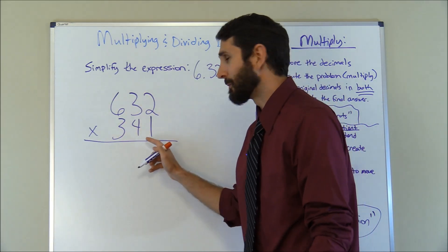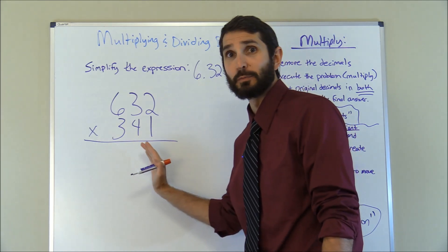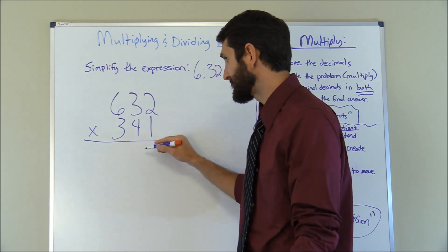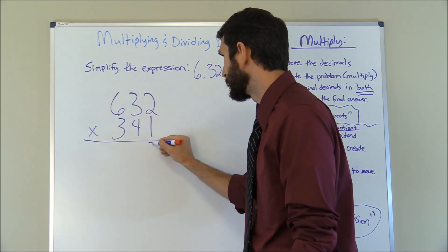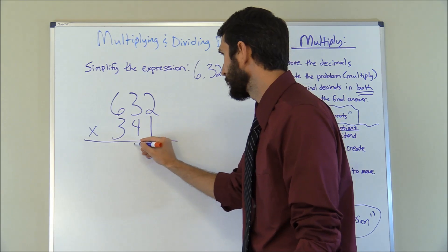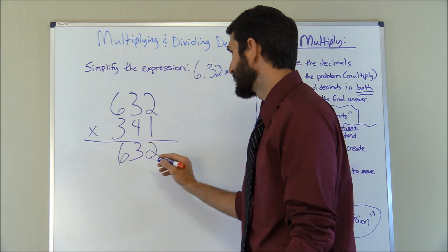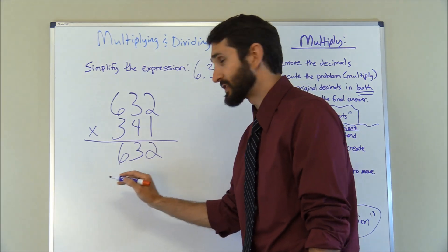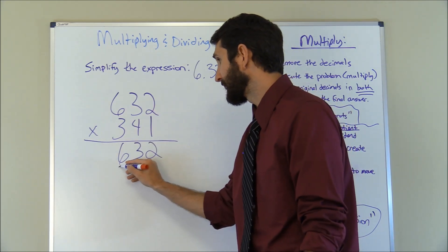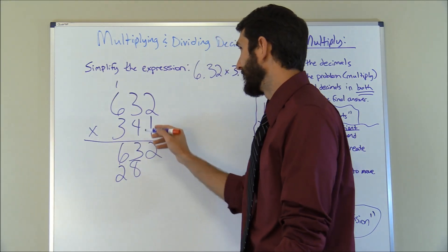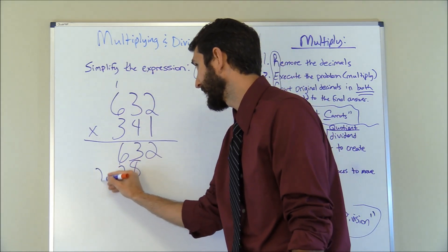You always start with the bottom number, beginning with the digit on the right, and multiply it by each number, carrying down. Then do the next number, moving one digit over, and so on. Starting with the 1: 1 times 2 is 2, 1 times 3 is 3, 1 times 6 is 6. Next, moving to 4: 4 times 2 is 8 — place the 8 under the 3. 4 times 3 is 12, carry the 2 down and put the 1 up. 4 times 6 is 24, plus 1 is 25.